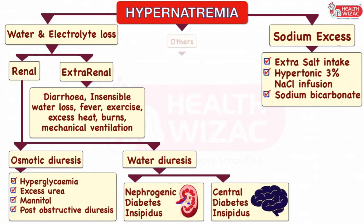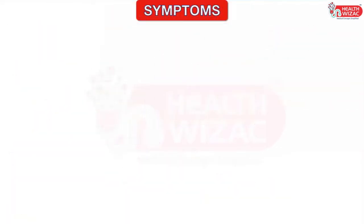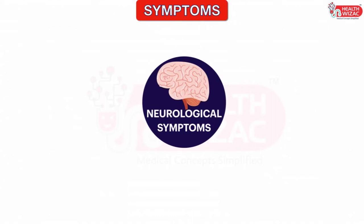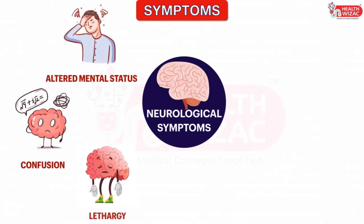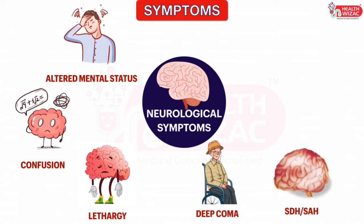Apart from this, hypernatremia can also be due to gestational diabetes insipidus, or in clinical conditions of electrolyte abnormalities associated with hypercalcemia and hypokalemia, or due to drugs like lithium used in the treatment of bipolar disorders. Clinical symptoms of hypernatremia are predominantly neurological, including altered mental status, confusion, lethargy, and even deep coma. Sudden shrinkage of brain cells in acute hypernatremia may lead to subarachnoid hemorrhage or subdural hemorrhage.